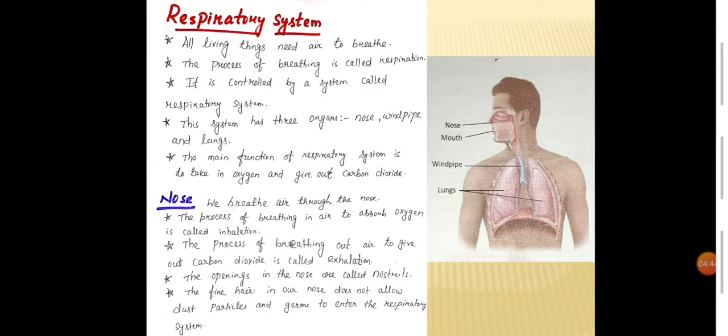Now, we are going to discuss about one more topic: Respiratory system. All living things need air to breathe. The process of breathing is called respiration. It is controlled by a system called respiratory system. The system has three organs: nose, windpipe and lungs. The main function of respiratory system is to take in oxygen and give out carbon dioxide.